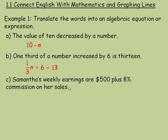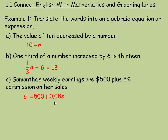In part C, Samantha's weekly earnings — we let capital E represent her earnings — are $500 plus 8% commission on her sales. We start with $500 and add to that. 8% commission is 0.08 multiplied by her sales, so 0.08 times S. That is added to $500, giving us E equals $500 plus 0.08S.